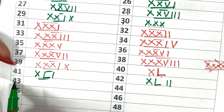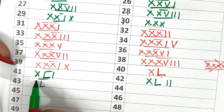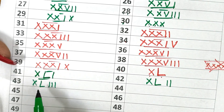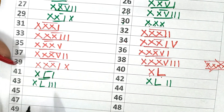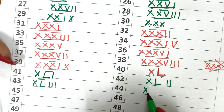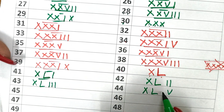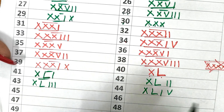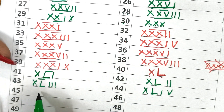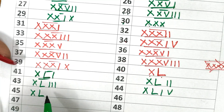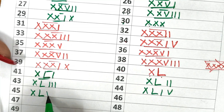Now it's 43: XL and then 3 — XLIII. Now 44: 40 and then 4, first write 5 and then subtract 1 from it — XLIV. Now 45: XL is 40 and then 5 — XLV.